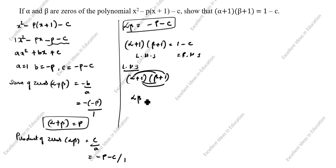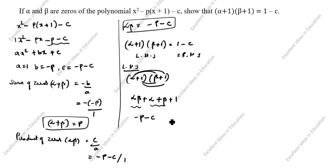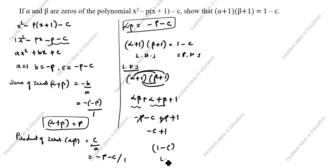Multiplying out: alpha times beta plus alpha times 1 plus 1 times beta plus 1 times 1, which gives alpha beta plus alpha plus beta plus 1. Now alpha beta value we know: minus p minus c. And alpha plus beta is p. So: minus p minus c plus p plus 1. Minus p and plus p cancel. What is remaining? Minus c plus 1, which is 1 minus c. You see here RHS is given as 1 minus c. So LHS equals RHS. Hence proved.